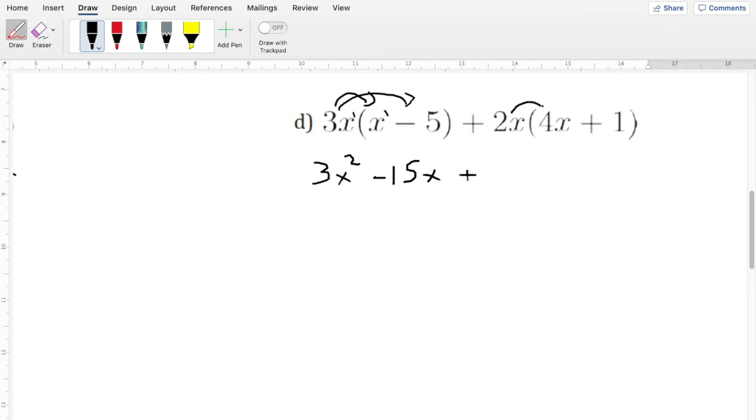then we're going to distribute again. So that's going to be 2 times 4 is 8. And remember, these are 1s up here. That's going to be x squared. I'm going to distribute again. Which is going to be plus 2x.